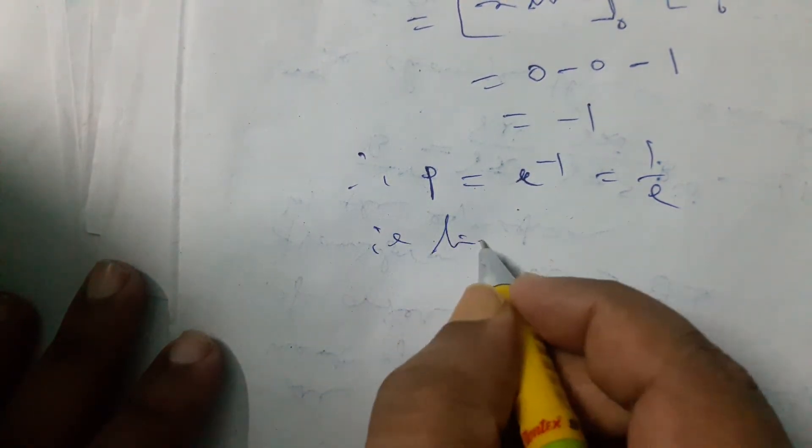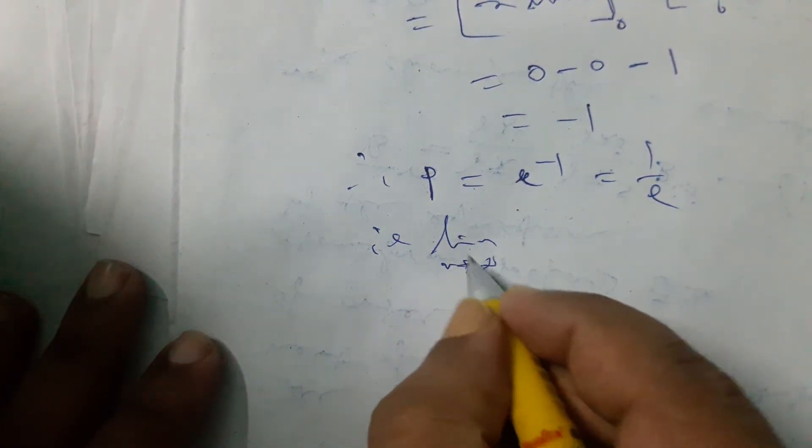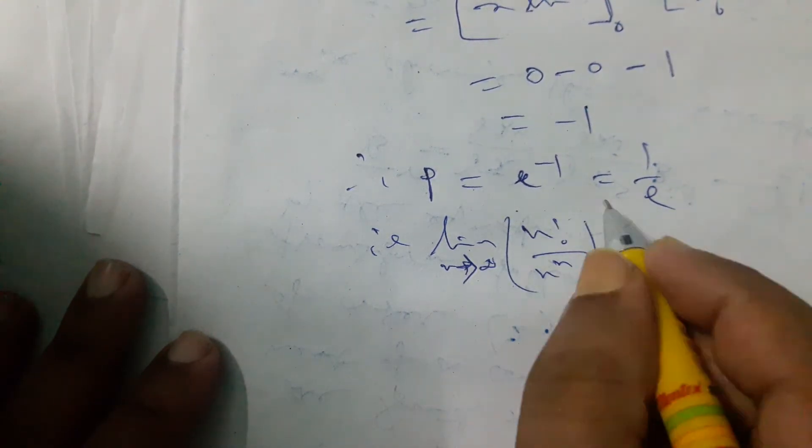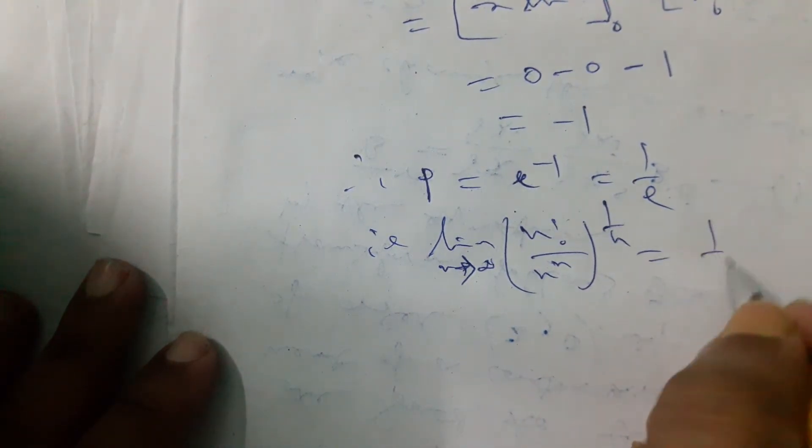That is, limit as n tends to infinity, n factorial by n to the power n, whole to the power 1 by n, is equal to 1 by e.